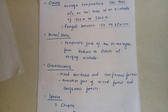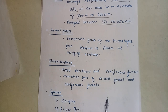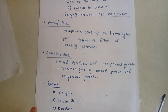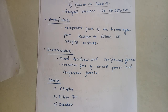In the north, they occur in the temperate zone of the Himalayas from Kashmir to Assam at varying altitudes. In the south, they are found in the Nilgiri and Anamalai hills at an elevation between 1000 meters to 1500 meters. Mountain forest consists of mixed deciduous and coniferous forest — that's why it is called mixed forest.